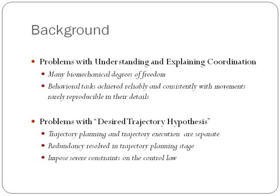Before discussing the findings of Torda and Jordan, it is important to discuss the difficulty in understanding motor coordination. The complexity arises from the apparent conflict between two fundamental properties of the motor system: the ability to accomplish high-level behavioral goals reliably and repeatedly, versus a large variability on the level of movement details. Current model of desired trajectory hypothesis does not account for this finding because it implements a strict separation between trajectory planning and trajectory execution, which is motivated by computational simplicity rather than optimality.